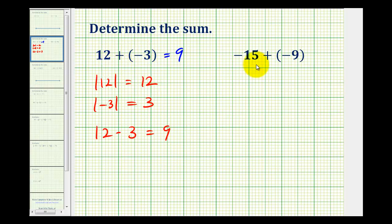For negative 15 plus negative 9, we could think of this as losing $15, and then adding another loss of $9. If we lose $15 and then we lose $9, we have a total loss of $24, so the sum is negative 24.